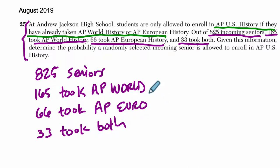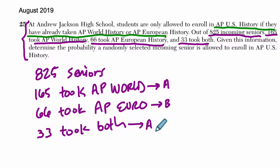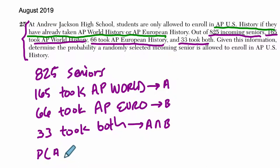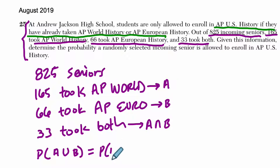Let's call AP World event A and AP Euro event B, and both will be A and B — that simplifies the whole process. If they took one or the other, it's a union question, so I'll use union notation. If they satisfy that union, they can take AP US History.